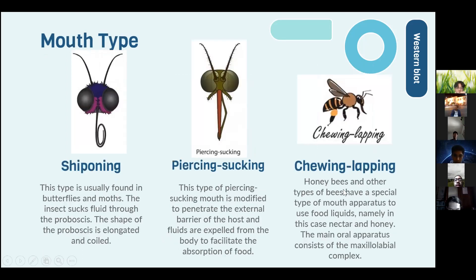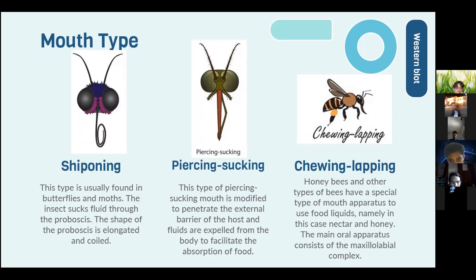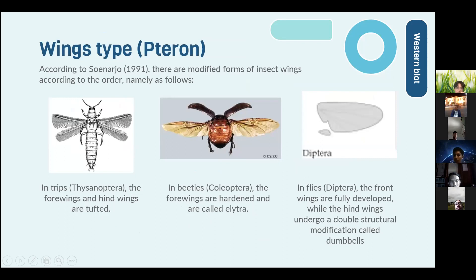The fourth mouth type is siphoning, usually found in butterflies and moths. The insect sucks fluid through the proboscis, which is elongated and coiled. The fifth is piercing-sucking — modified to penetrate the external barrier of the host, with fluids secreted to facilitate food absorption. The sixth is lapping — honeybees and other bees have a special mouth apparatus to consume liquids such as nectar and honey, with the main apparatus consisting of the maxilla-labium complex.